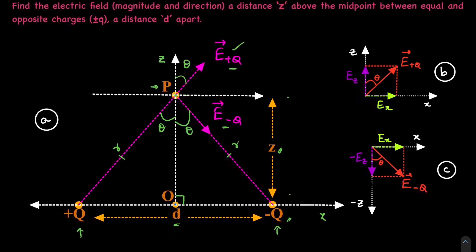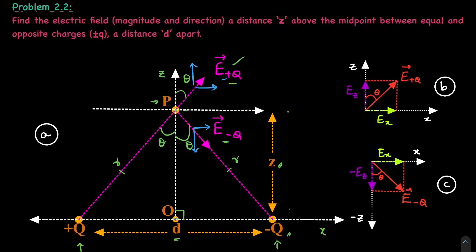What we'll do is split E plus q into two parts — a vertical component and a horizontal component. Similarly, we'll split E minus q into a horizontal component and a vertical component. Now because these charges are equal and opposite, the vertical components cancel out and the horizontal components add up. The horizontal components act in the same direction, but the vertical components are in opposite directions. So essentially what we are left with is two times the horizontal component.